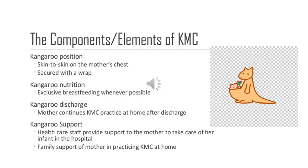The kangaroo mother care concept has been adopted in developing countries and is widely practiced for neonatal care. The four important components of kangaroo mother care are: number one, skin-to-skin positioning of the baby on the mother's chest, with the baby's head on one side so that the airway passage is not obstructed. This is done four to five times a day and a wrap is put on the baby. The skin-to-skin positioning stabilizes the heart and respiratory rate, improves oxygen saturation, and regulates body temperature. The second important component is nutrition, which is exclusively done by breastfeeding on demand.